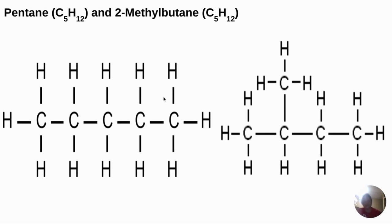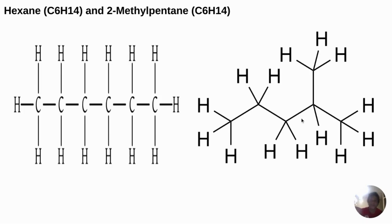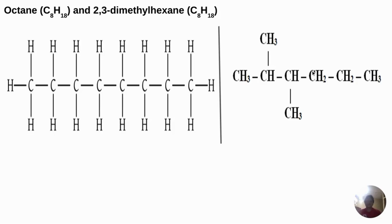The same thing goes again if we are given hexane and 2-methylpentane — one is in the linear form, while the other has a substituent at carbon 2. And again between octane and 2,3-dimethylhexane: both have eight carbons and eighteen hydrogens, so the molecular formula is the same, but octane has no substituent while 2,3-dimethylhexane has two substituents — at carbon 2 and at carbon 3.